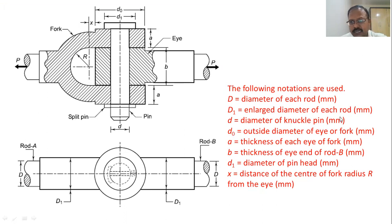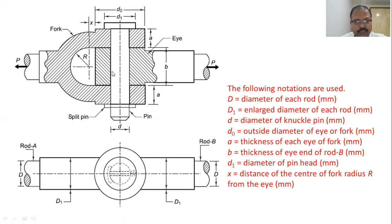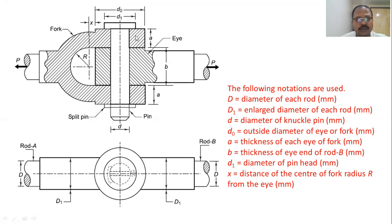D1 is the enlarged diameter of each rod. Small d is the diameter of the knuckle pin. D1 is the diameter of the knuckle pin head. DO is the external diameter of eye and fork. X is the distance which is approximately taken as 10 mm. A is the thickness of the fork and B is the thickness of the eye.